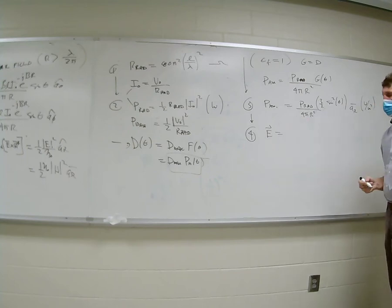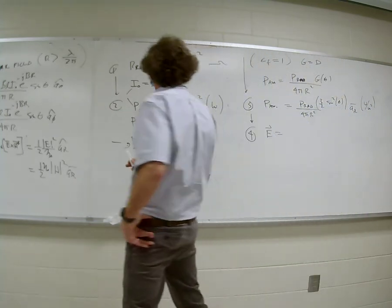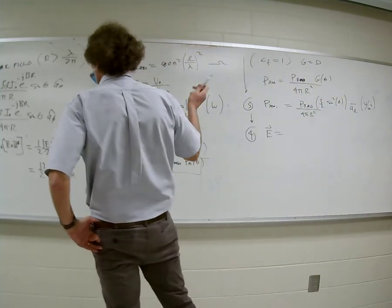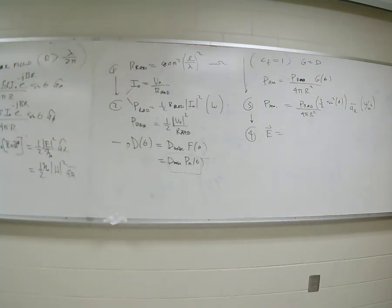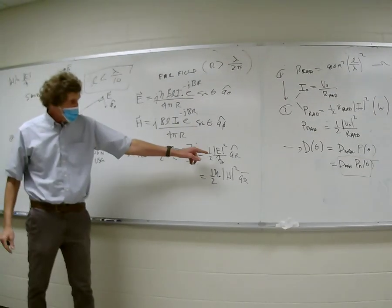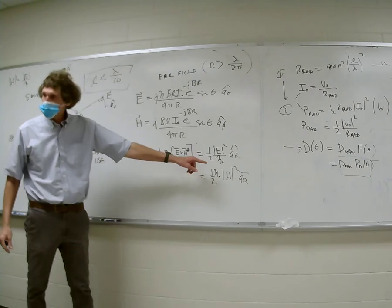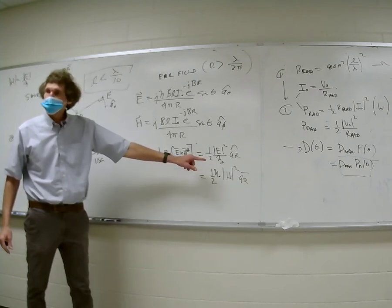After you get the power density, you can get anything else. How do I get the E field if I know the power density? The average power density is one-half times E² over η. So to get the E field magnitude, just take two times η times the average power density and take the square root.